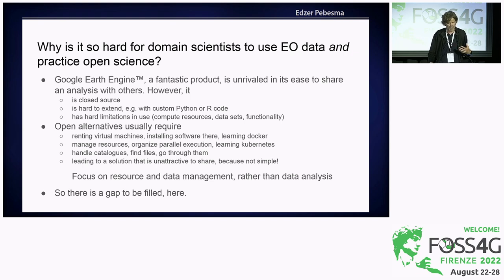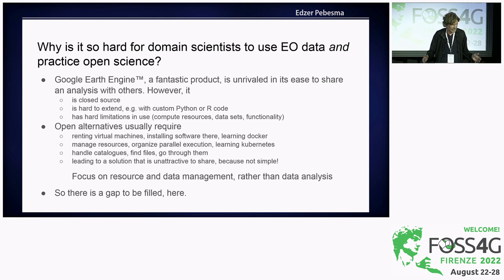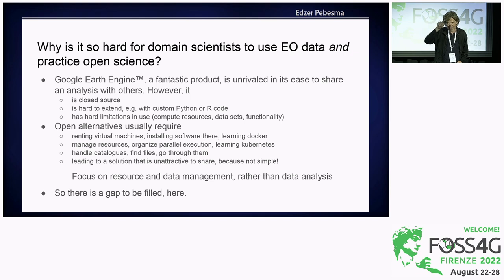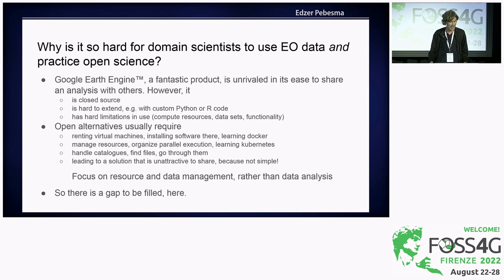After running around frustrated for a number of years, I ran into an AGU conference where Google had this Earth Engine workshop and demonstrated it — and that product grew for like 10 years. It's a fantastic product — it's unrivaled and easy to share an analysis with others. You solve your problem, write a script, click share, copy a URL, send it to somebody else, they open it and run the same thing. It's literally 10 seconds to share an analysis. So why can Google do it and the rest of the world can't?